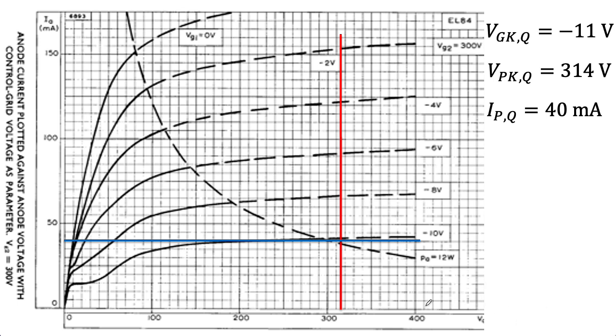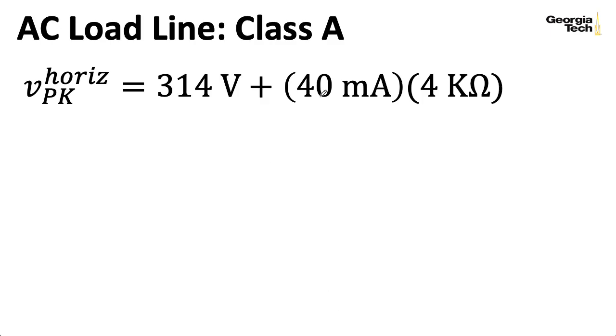All right, so let's plot a point on the horizontal axis. We can imagine marching down 40 milliamps, and as we're marching down, we march to the right according to Ohm's law, based on the impedance we see reflected through the speaker. So what I'm going to do is I'm going to take the starting point of 314 volts, and I'm going to add to it that 40 milliamps times 4 kilohms as seen reflected by the speaker.